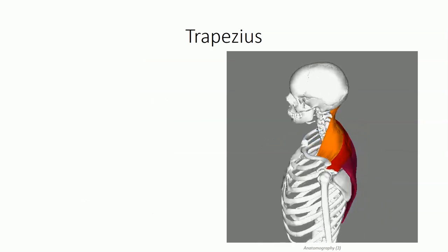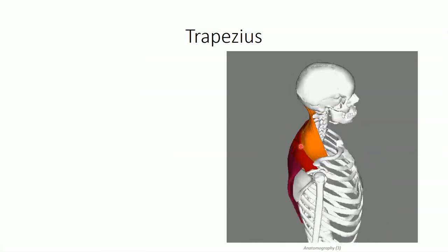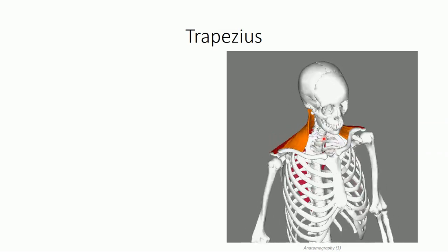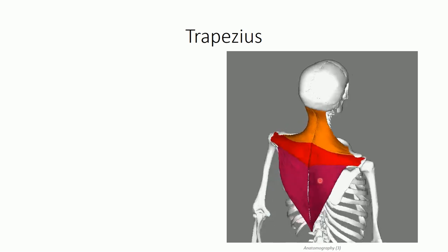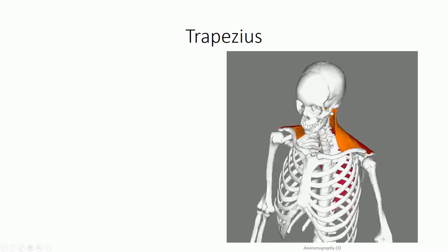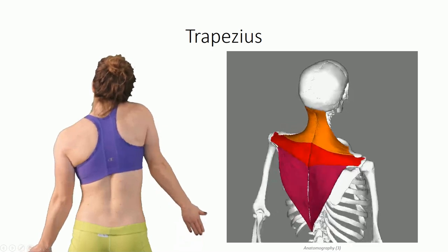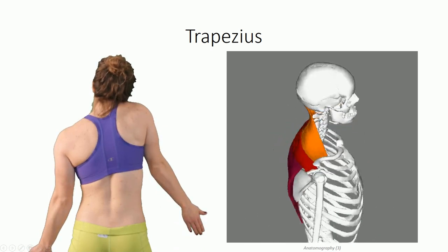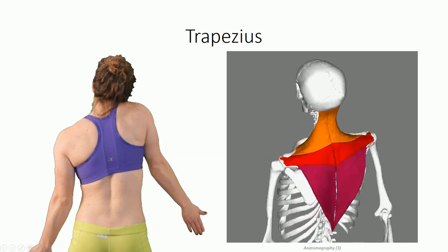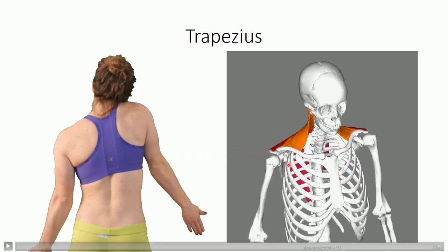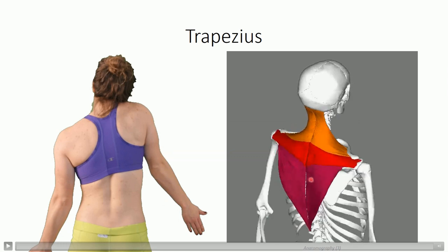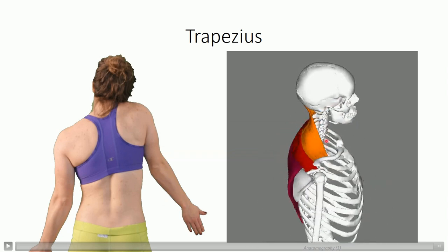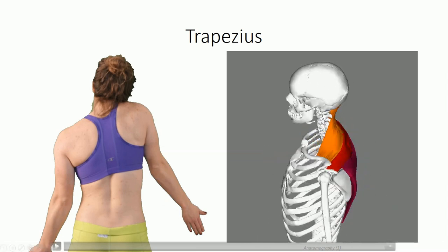The function of trapezius is complex depending on the specific fibers contracting. It's important to remember that we have precise control over activating specific regions within a muscle rather than having to fully activate a muscle all at once. Selective activation of the superior fibers of trapezius results in scapular elevation and slight upward rotation of the scapula. Conversely, selective activation of the inferior fibers results in scapular depression and slight downward rotation. Selective activation of the middle fibers or maximal activation of the entire muscle results in scapular retraction towards the vertebral column.